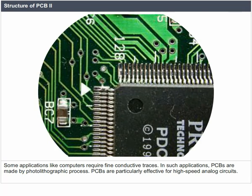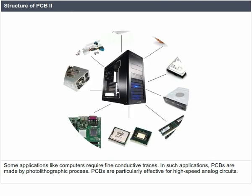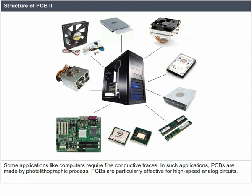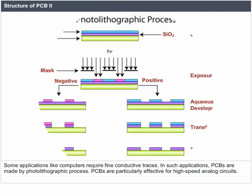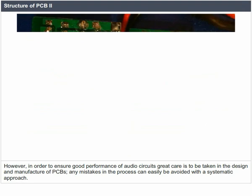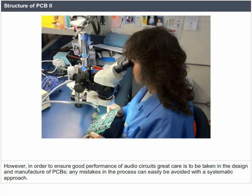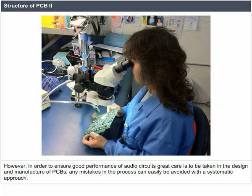Some applications like computers require fine conductive traces. In such applications, PCBs are made by photolithographic process. PCBs are particularly effective for high-speed analog circuits. However, in order to ensure good performance of audio circuits, great care is to be taken in the design and manufacture of PCBs. Any mistakes in the process can easily be avoided with a systematic approach.